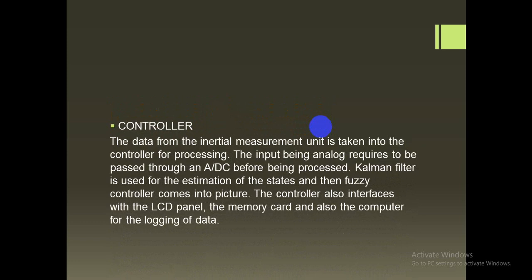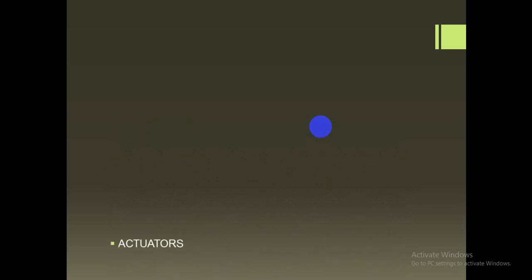Data from the inertial measurement unit is taken to the controller for processing. The input being analog requires conversion through an ADC before being processed. A Kalman filter is used for estimation of the states, and then the fuzzy controller comes into the picture as the decision maker for the system. The controller also interfaces with an LCD panel, memory card, and computer for logging data. The ADC converts analog data into digital data, and the Kalman filter handles estimation, while the fuzzy controller then continues to the servo controller and on to the actuator.